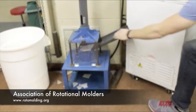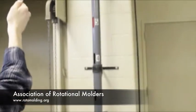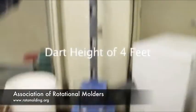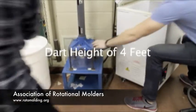The falling dart, in this case is procedure A using a 10 pound dart, impacts the surface of the part that will be in contact to the mold when molding.